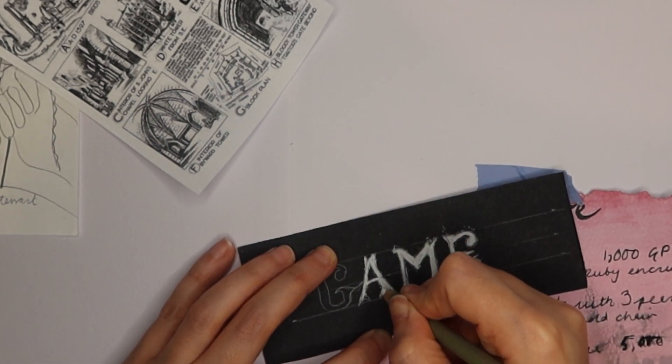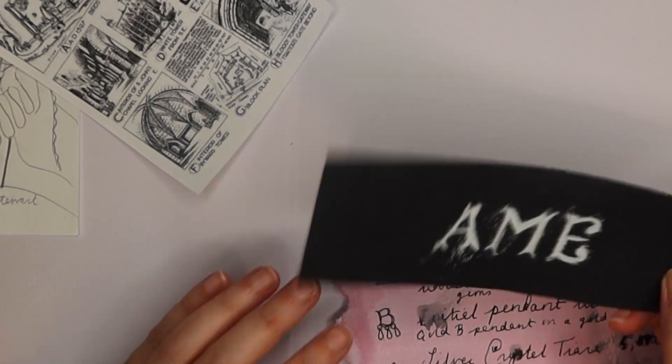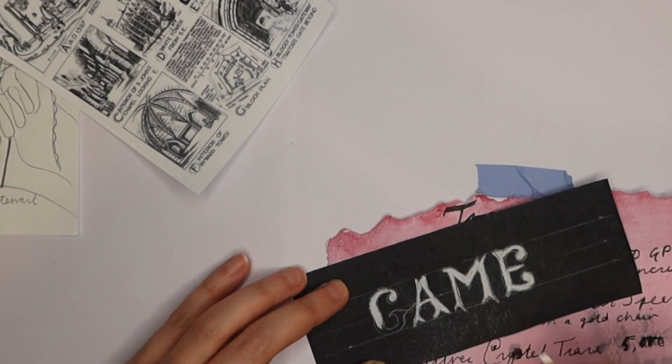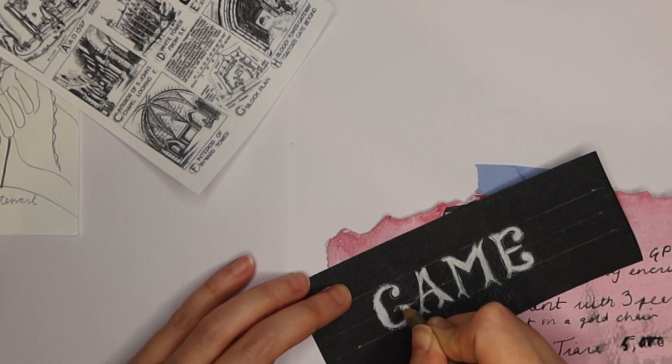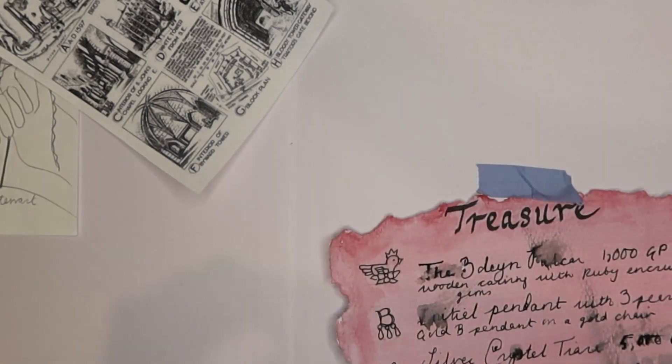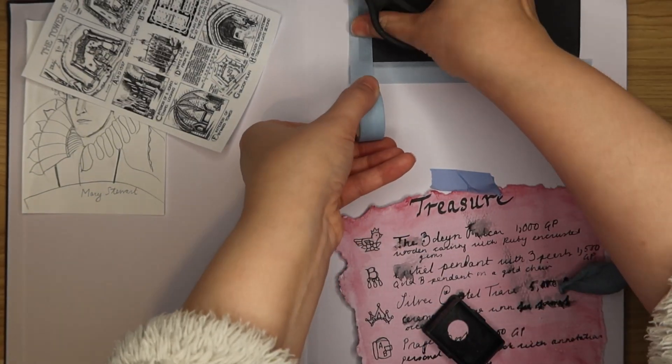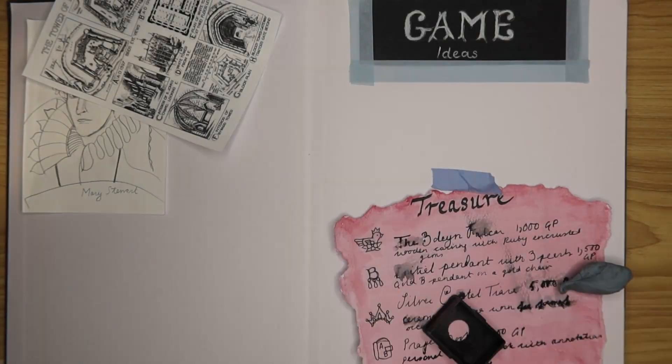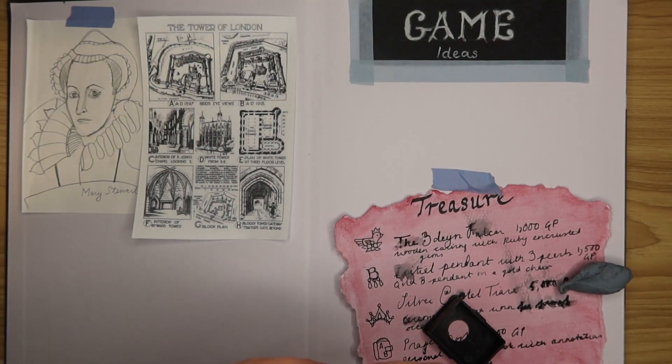Now is also a good time to think about the type of dungeon I want to create. So I've settled on the Tower of London, in particular the White Tower which is the main fortress. I know Anne Boleyn stayed in the Queen's house during her time there but it was hard to find its exact layout. The White Tower on the other hand has a floor plan I can base my dungeon on.